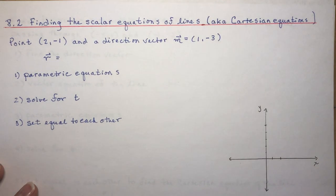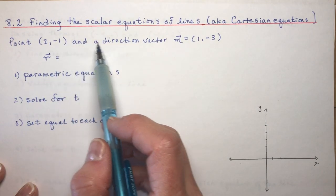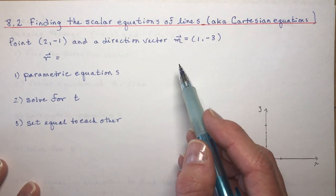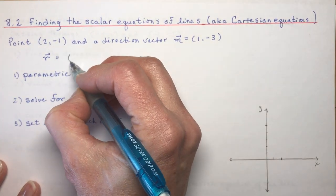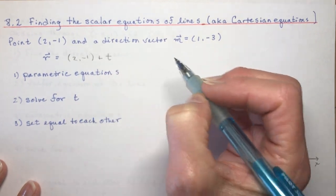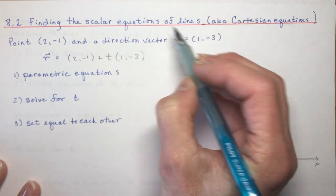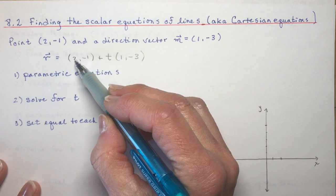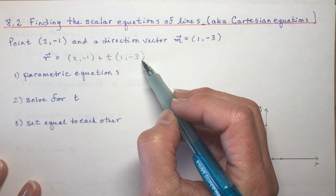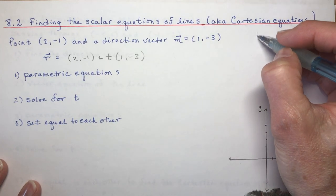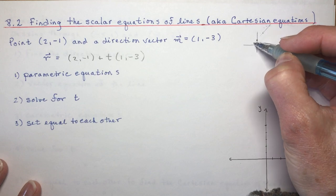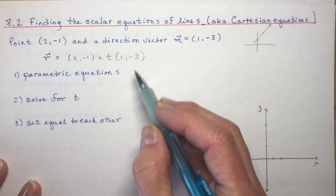Back to section 8.2 — we have a point (2, -1) and a direction vector. Remember that for vector equations of lines all we need is a point and a direction vector, so we list the point first: (2, -1) plus some scalar of the direction vector. All the other points can be found from (2, -1) by adding a scalar multiple of the slope — just like in grade 9 going up 3 over 2.